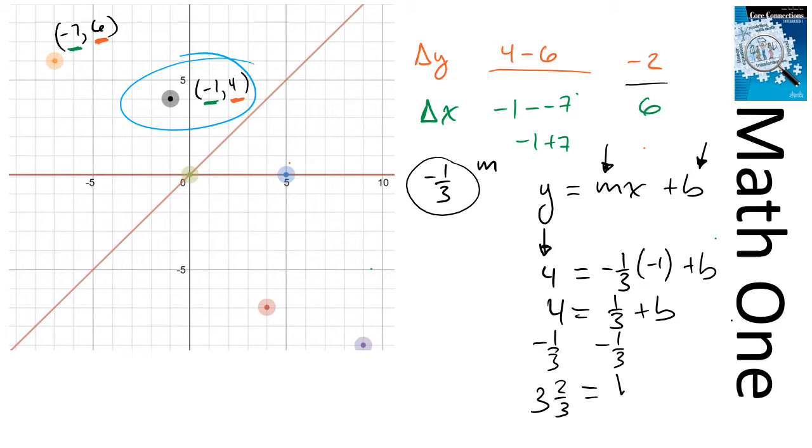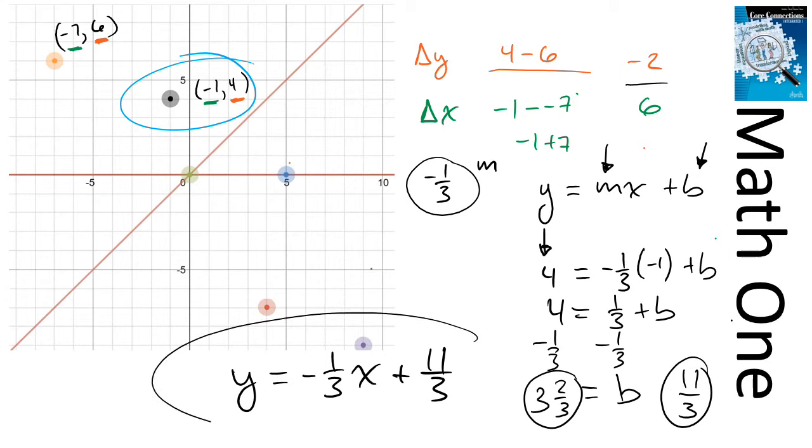And that is exactly what b is. Now, it's probably more convenient to write 3 and 2/3 as an improper fraction, 11/3. So I'm going to write that as 11/3, just because it's easier to enter on the website. But the equation of the line now I know: the equation of this line is y equals -1/3x plus 11/3.